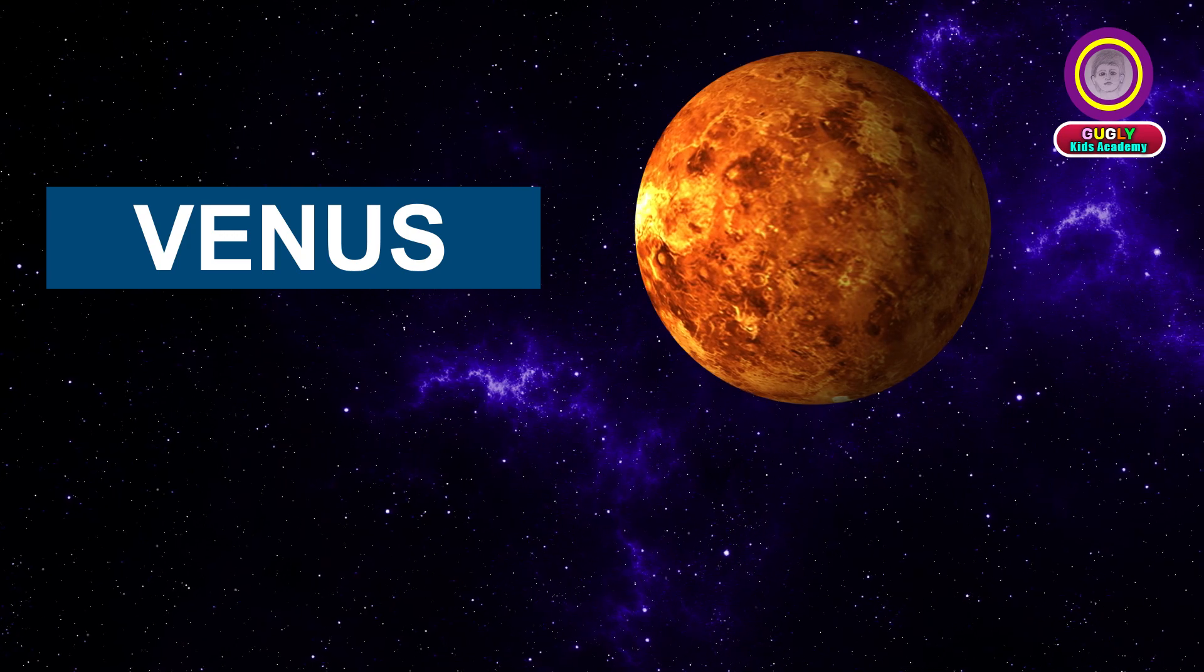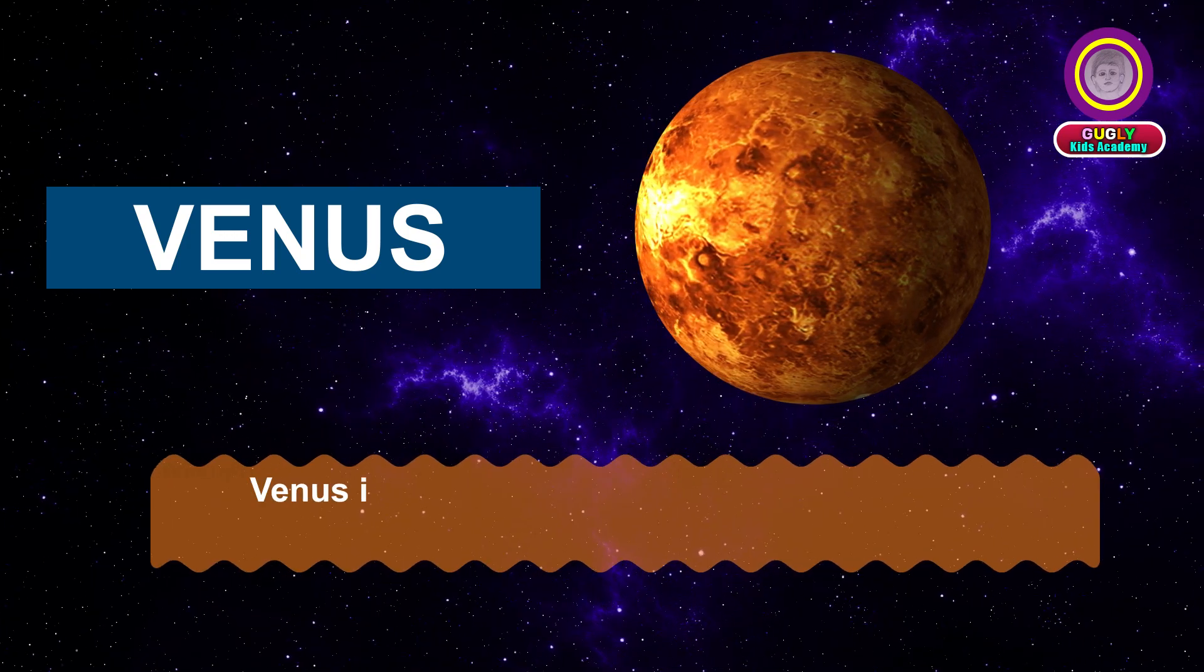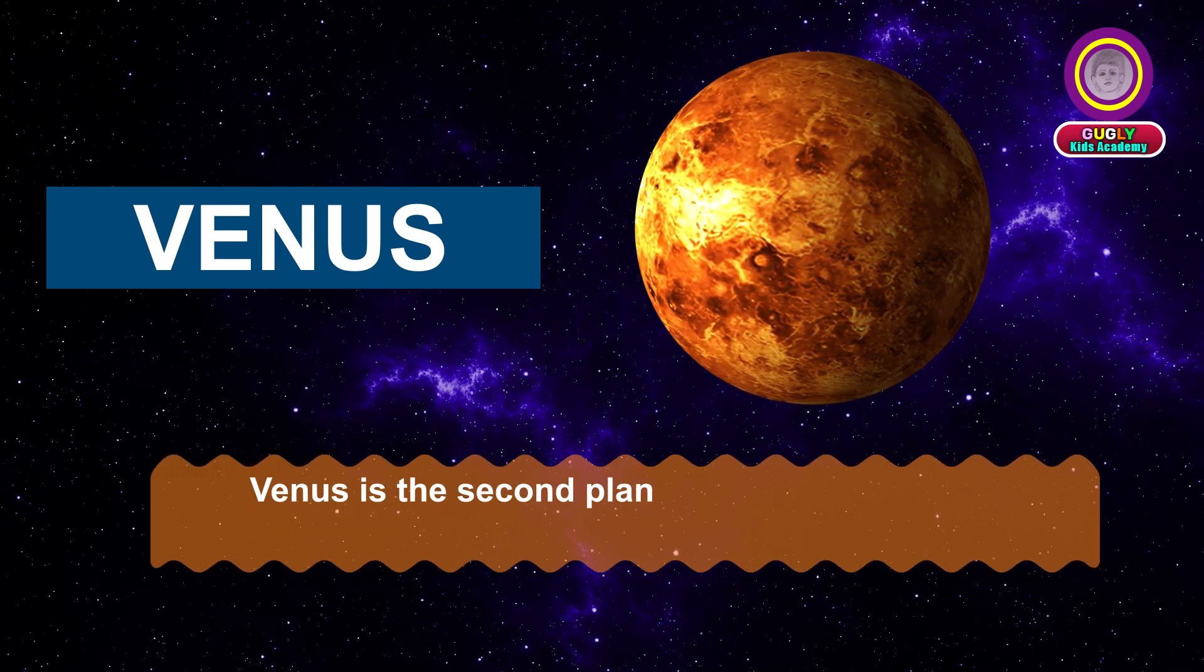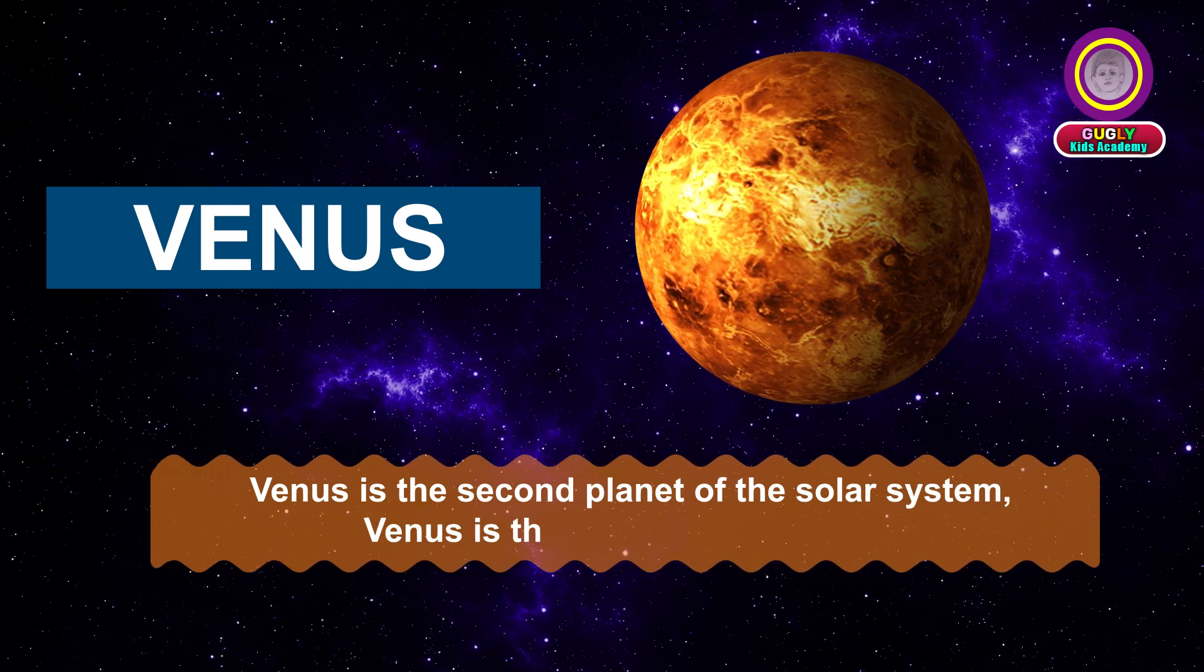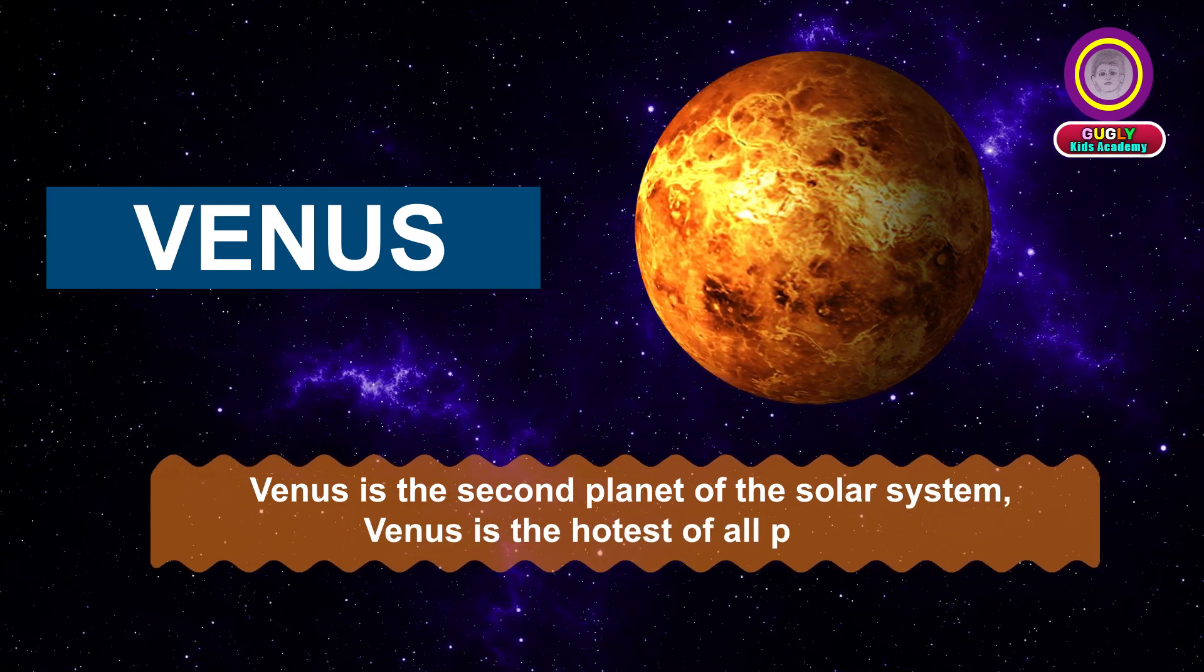Venus is the second planet of the solar system. Venus is the hottest of all planets.